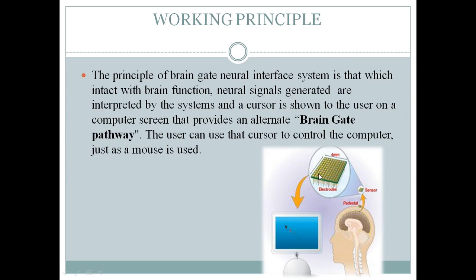The principle of the Brain Gate neural interface system is that, intact with brain function, neural signals generated by the brain are interpreted by the system. A cursor is shown to the user on a computer screen, providing an alternate brainwave pathway. The user can use the cursor to control the computer just as a mouse is used.